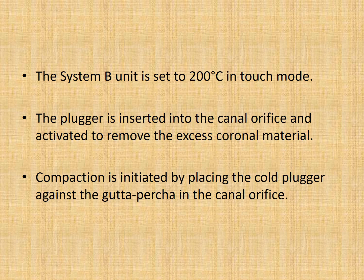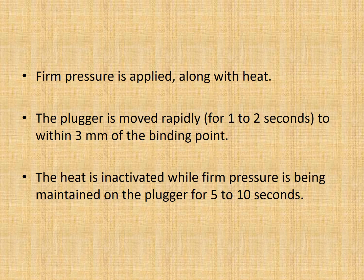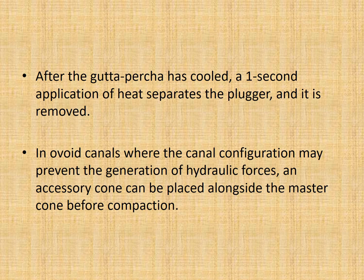System B is set to 200 degrees in touch mode. The plugger is inserted into the canal orifice and activated to remove the excess coronal material. Compaction is initiated by placing the cold plugger against the gutta percha in the canal orifice, then firm pressure is applied along with heat. The plugger is moved rapidly for 1-2 seconds to within 3 mm of the binding point. The heat is then inactivated while firm pressure is maintained on the plugger for 5-10 seconds. After this, when the gutta percha is cooled, a 1-second activation of heat separates the plugger and it is carefully removed. In ovoid canals where the canal configuration may prevent the generation of hydraulic forces, an auxiliary cone can be placed along the master cone before compaction; otherwise the gutta percha cone comes out with the plugger.